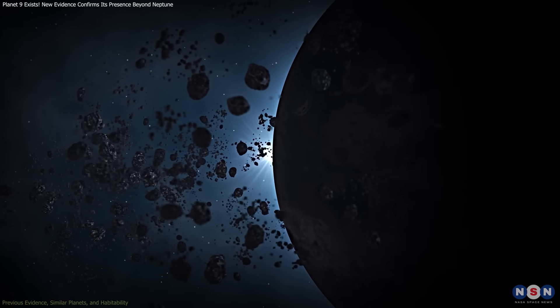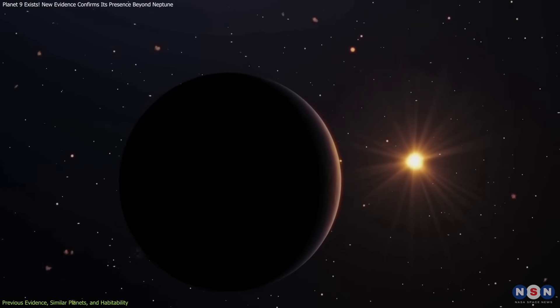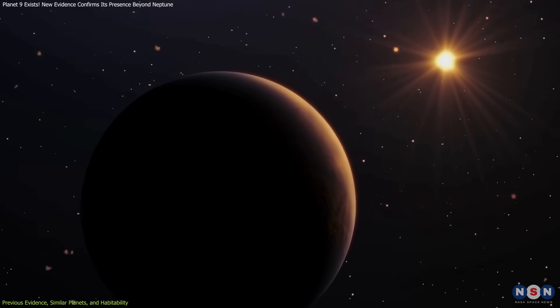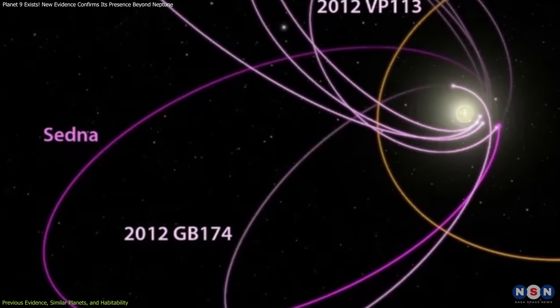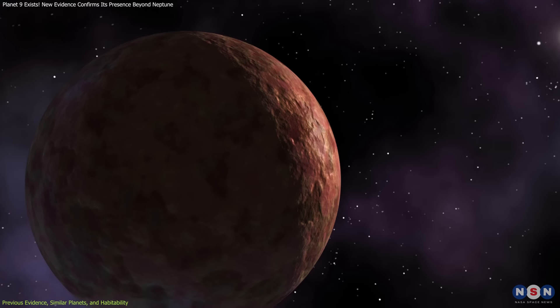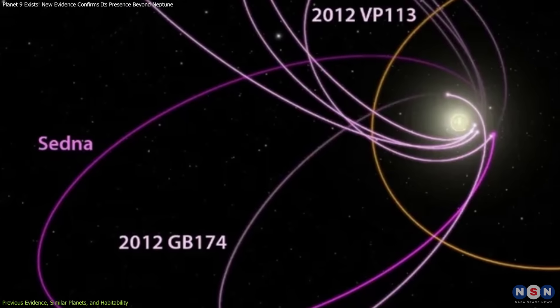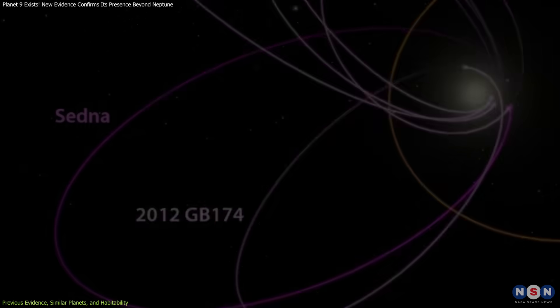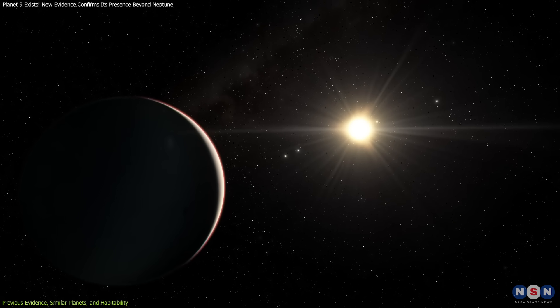But Planet Nine isn't just a theory built on recent evidence. Its origins stretch back to earlier astronomical puzzles. Long before Batygin and Brown's work, astronomers noticed oddities in the orbits of objects like Sedna, a distant dwarf planet with an unusually elongated orbit. Sedna's orbit couldn't be explained by the known planets, which hinted at the gravitational influence of a hidden world far beyond Neptune.